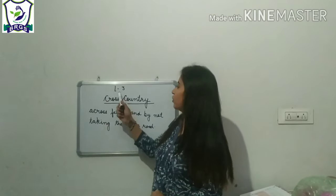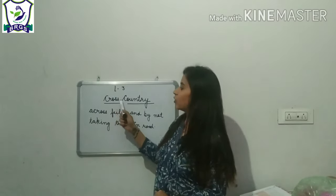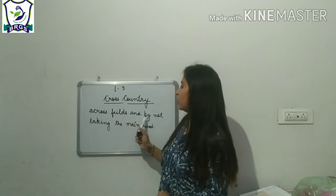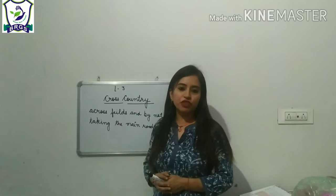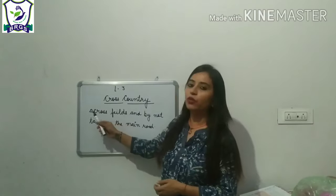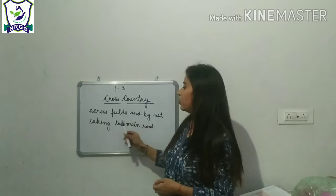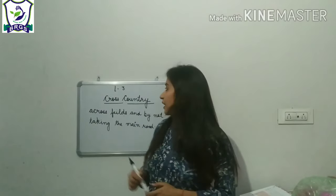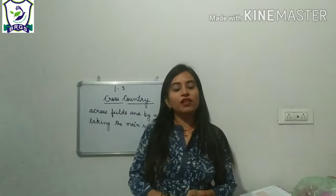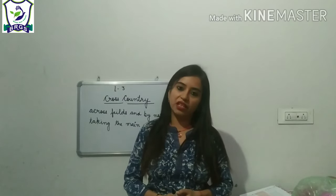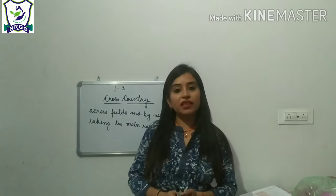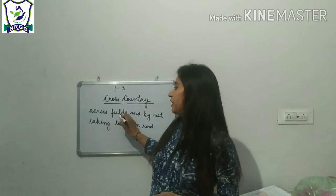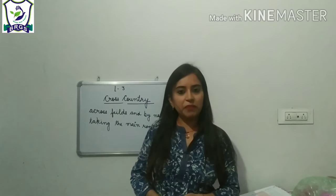Today we are going to read your third lesson of your reader book, that is 'The Cross Country.' Cross country means across fields and not by taking the main road. It is a kind of journey accomplished across the fields and not by taking the main road. This title is suitable for our story because it is a story about two boys who accomplish their journey from Delhi to Jatog by going across the fields and not by taking the direct or main roads.